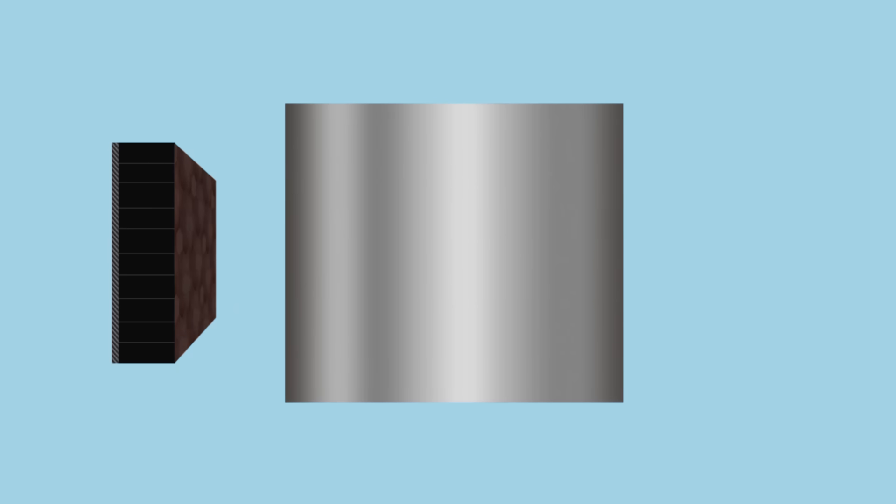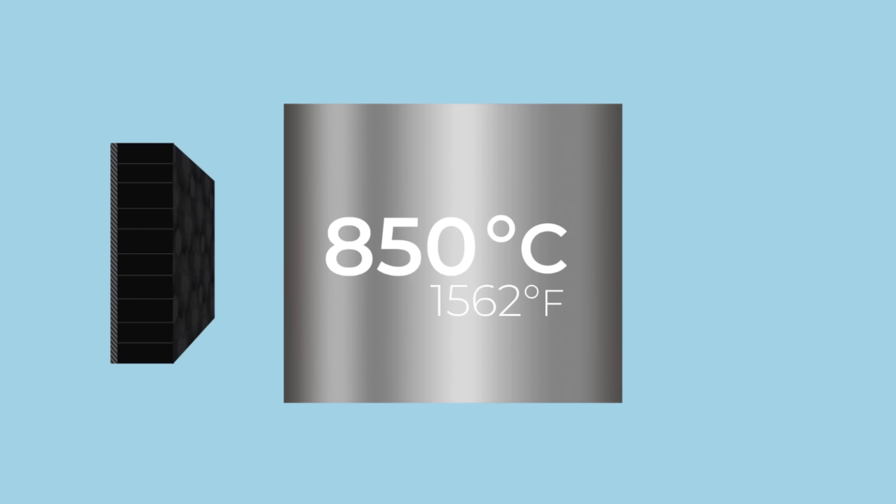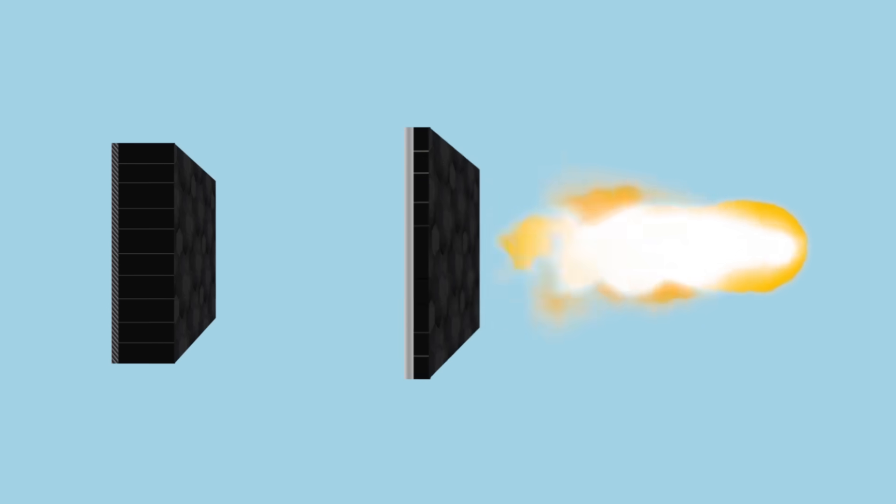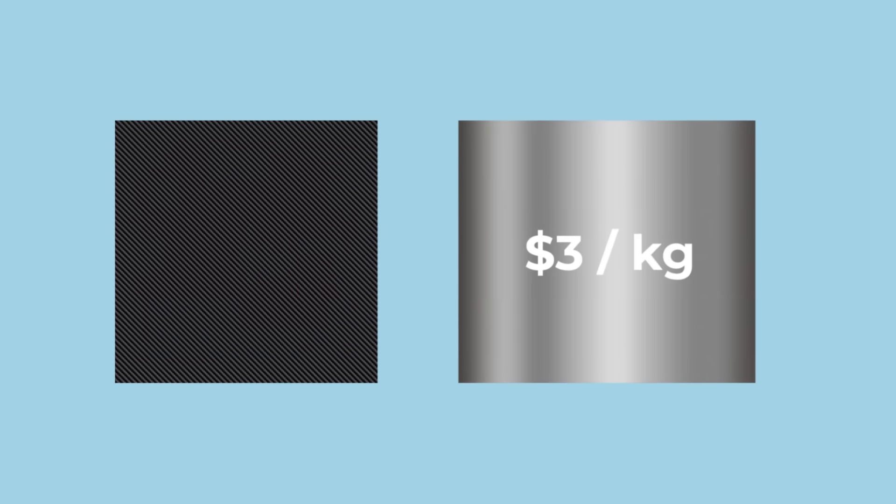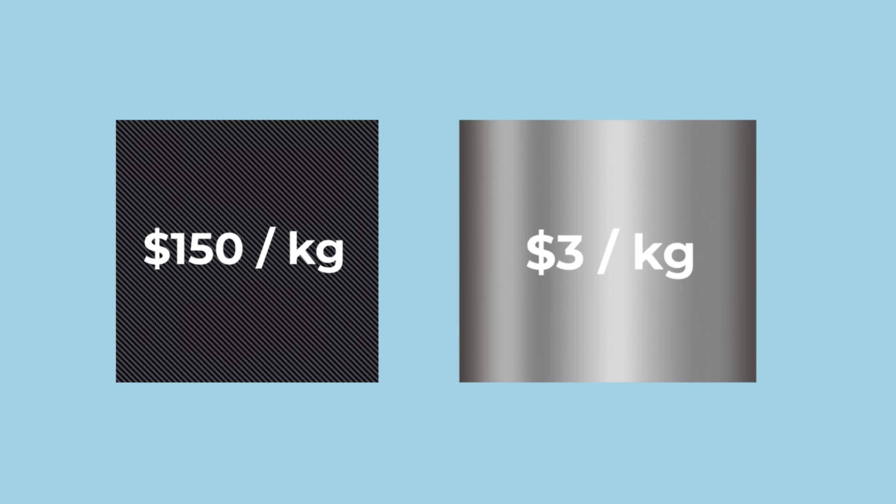Although stainless steel is heavier, it can deal with much higher temperatures. And so, only a very thin heat shield would be required. Stainless steel is also much cheaper than carbon, costing just $3 per kilogram, compared to an incredible $150.